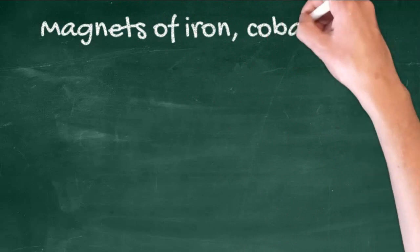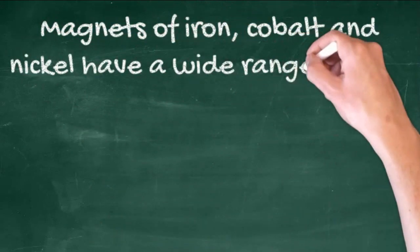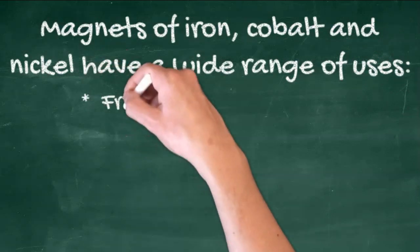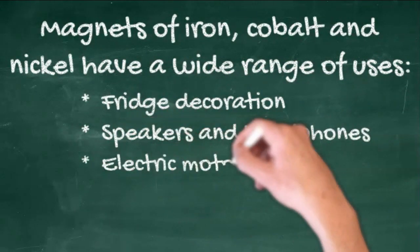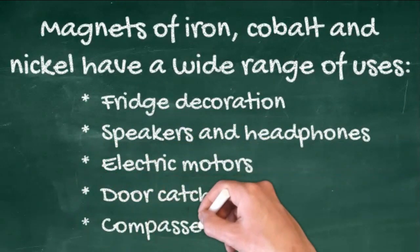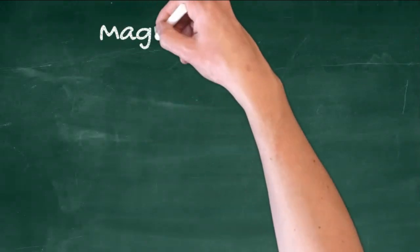We come across magnets all the time. Magnets of iron, cobalt, and nickel have a wide range of uses. You see them in fridge magnets, speakers and headphones, electric motors, door catchers, even the obvious compasses. Make sure you can remember at least one example of a use.